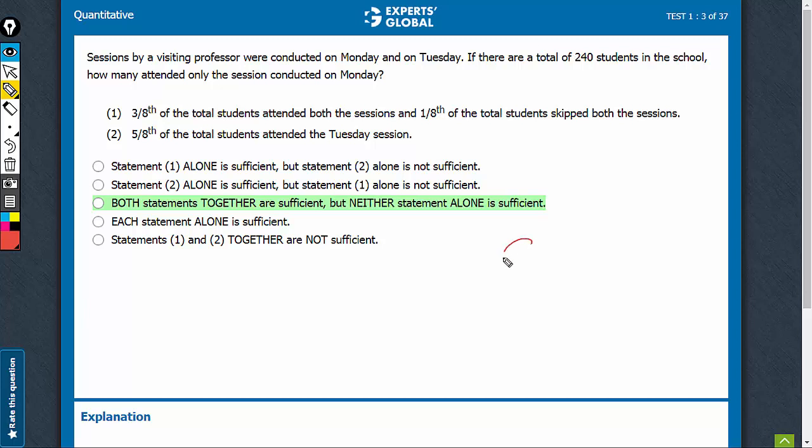The two sets involved are Monday and Tuesday. Statement 1 says 3/8th. 240 is the total. 1/8th would be 30, so 3/8th would be 90 here.